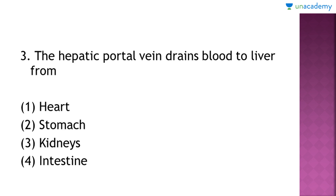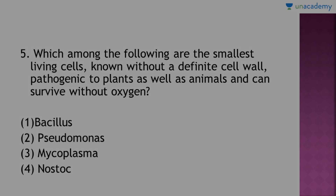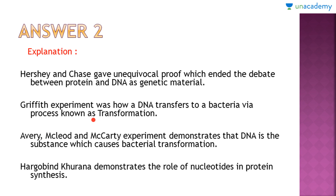Next: what is the final proof of DNA as the genetic material? The options are: Griffith; Hershey and Chase; Avery, MacLeod and McCarty; and Har Gobind Khorana. Griffith experimented on how DNA transfers to bacteria by a process known as transformation. Hershey and Chase gave the definitive proof which ended the debate between protein and DNA as genetic material. We have to remember the scientists' names and their experiments. This is the DNA chapter which we will study in detail, including replication, translation, and techniques like Southern blot and Northern blot.